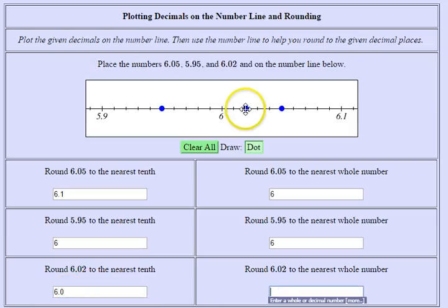And rounding to the nearest whole number, again it's closest to 6.